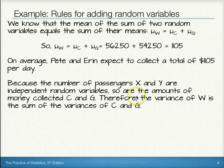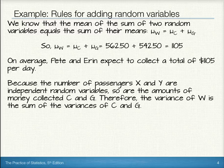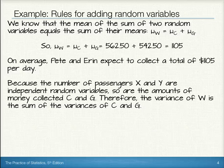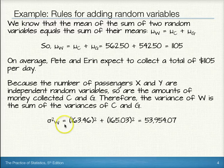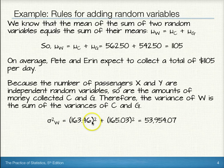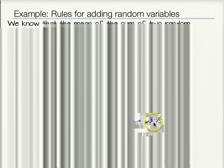Because the number of passengers X and Y are independent random variables, so are the amounts of money collected C and G. Therefore, the variance of W will be the sum of the variances of C and G. So the variance of W will be the variance of C, which is 163.46 squared, plus 165.03 squared, the variance of G, for $53,954.07.